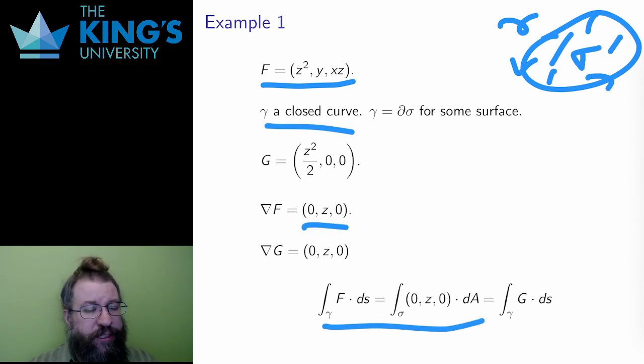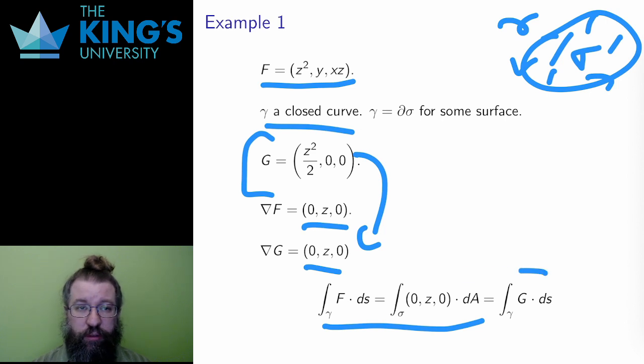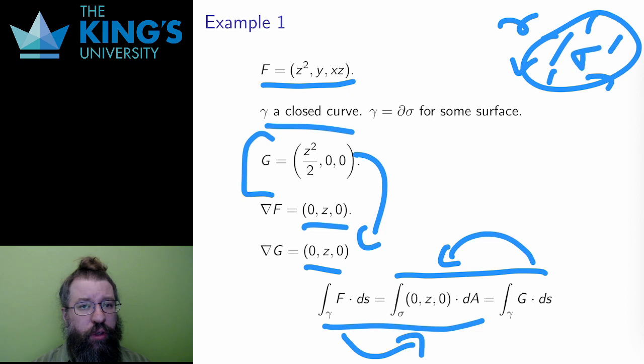However now consider the field G. The curl of G is also zero. So the line integral of G over gamma is also the flux of zero over the surface. I can use Stokes for both integrals.